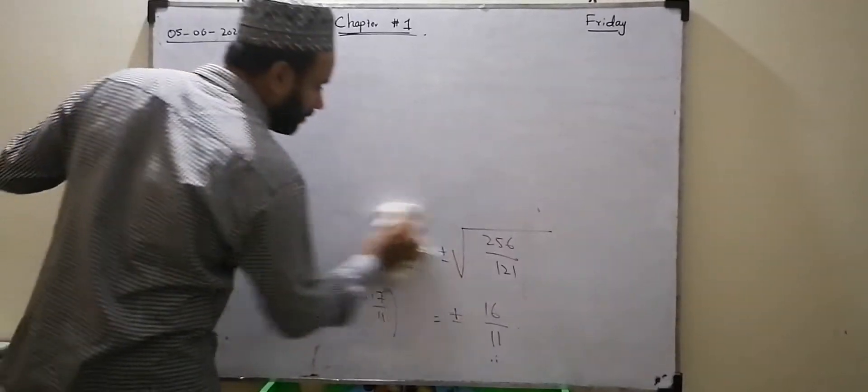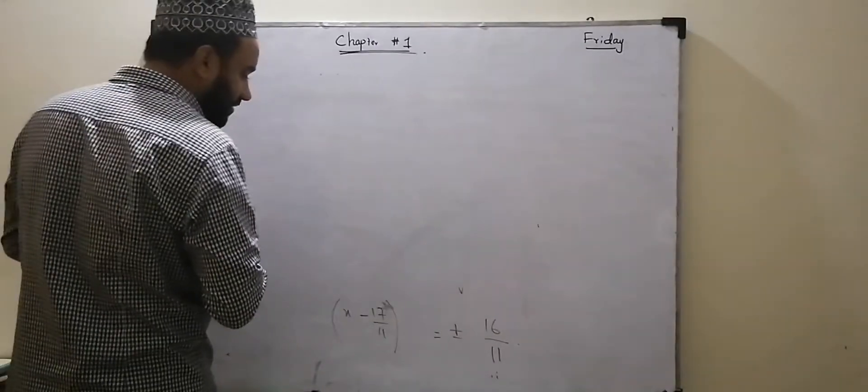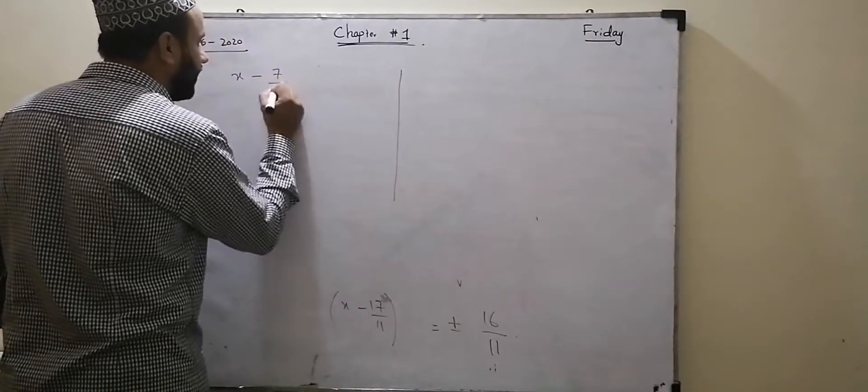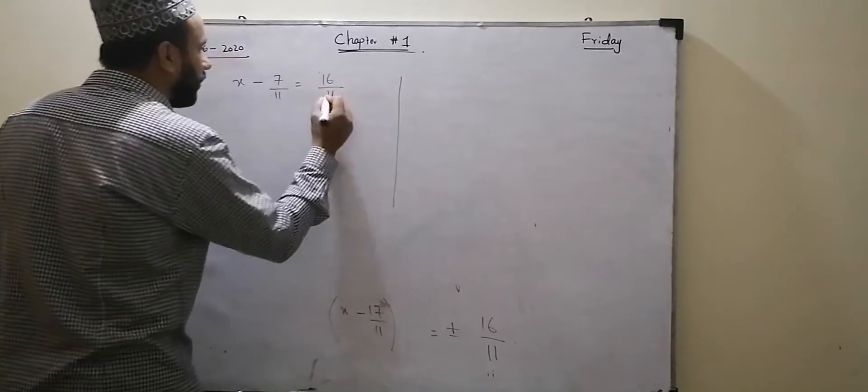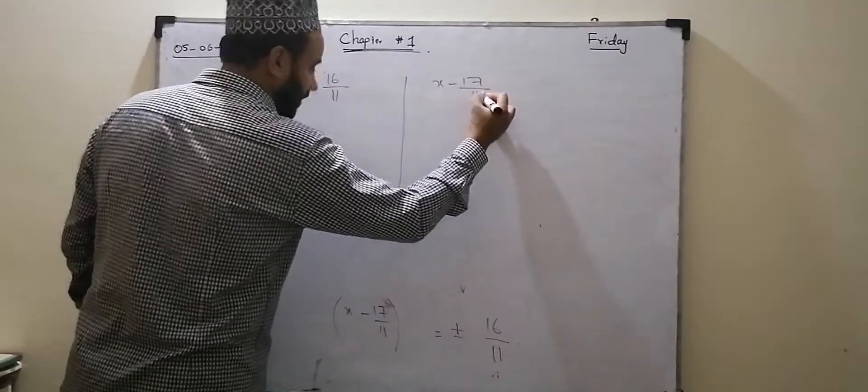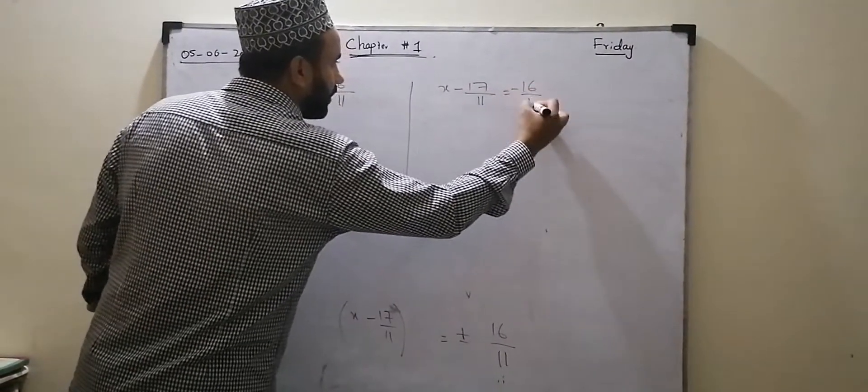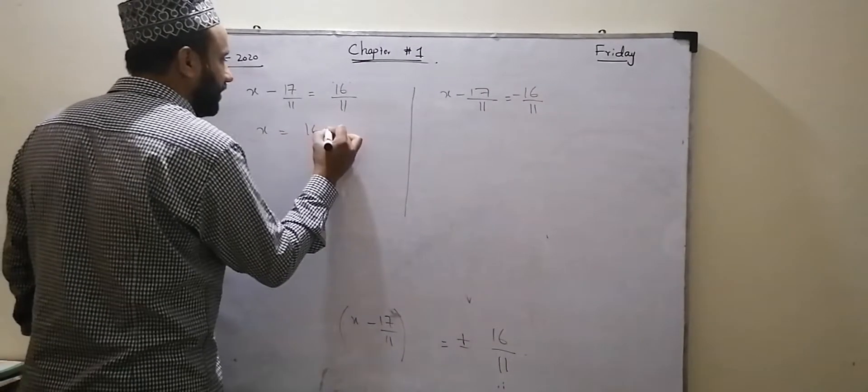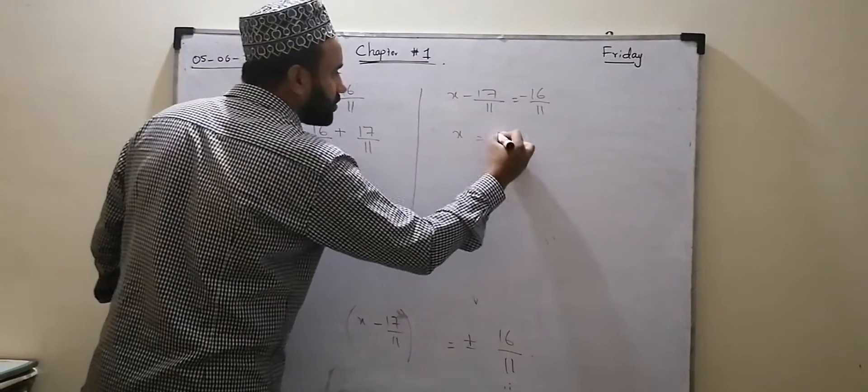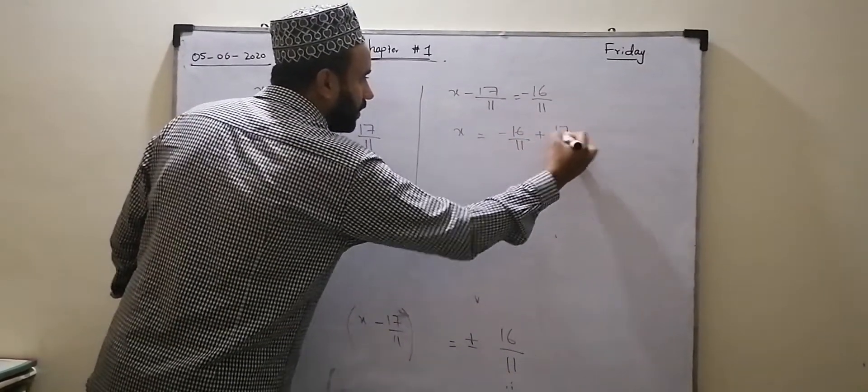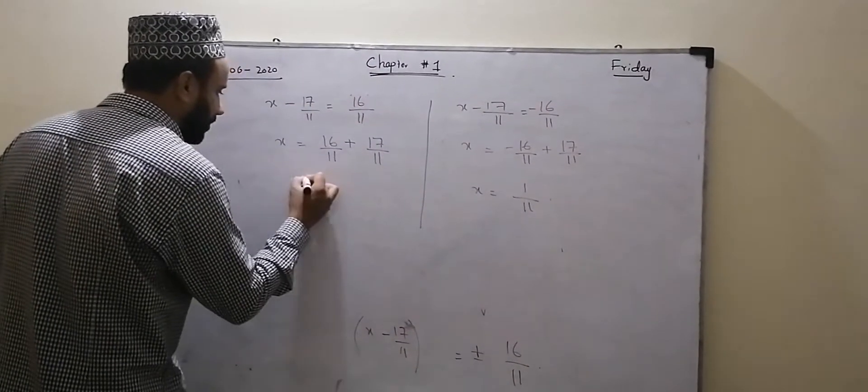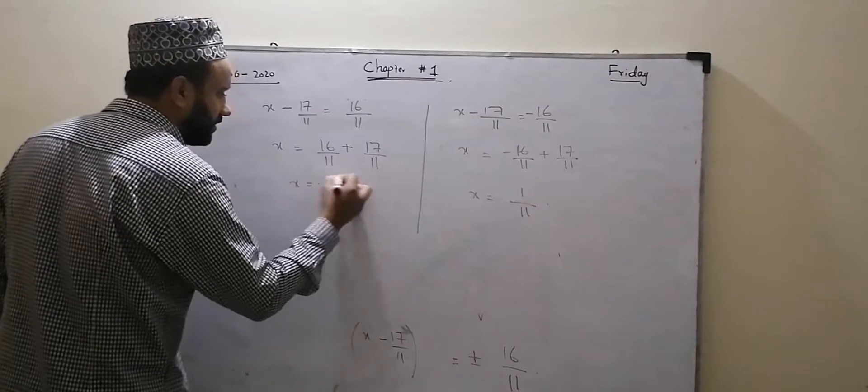We have two possibilities. x minus 17 by 11 equals plus 16 by 11 is one way. And x minus 17 by 11 equals minus 16 by 11 is the second possibility. First possibility: this gives 33 by 11. Second possibility: this gives 1 by 11.